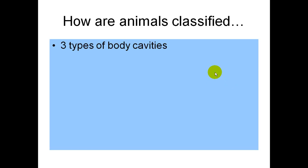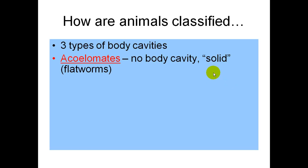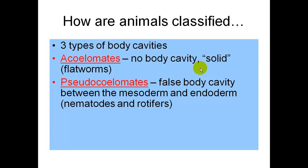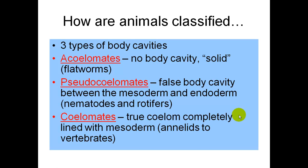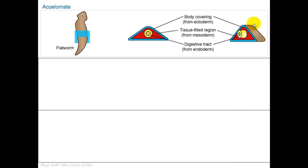Animals are also classified on the three types of body cavities. If they do not have a body cavity at all — meaning they're solid throughout the body — those are called acoelomates. Pseudocoelomates have a false body cavity because they do not have all three tissues; the false body cavity lies between the mesoderm and endoderm. A true body cavity makes them coelomates, meaning they're completely lined with mesoderm.